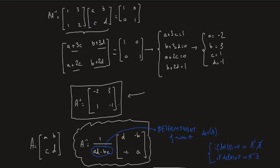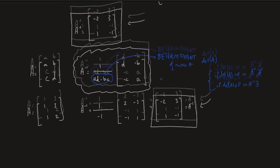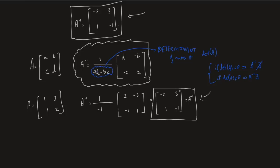A key result on homogeneous systems is that X=0 is the only solution if A is non-singular. We showed how to compute the inverse of a 2×2 matrix — either by solving a system of four equations in four unknowns, or using the formula involving the determinant AD−BC. We introduced the determinant and its usefulness: if det(A)=0 the inverse doesn't exist; otherwise it does. Thanks for watching — please like and subscribe, and leave any questions in the comments below.